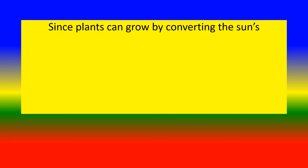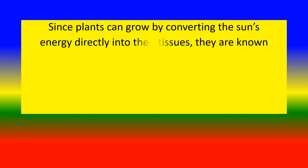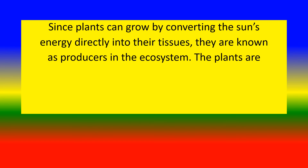Since plants can grow by converting the sun's energy directly into their tissues, they are known as producers in the ecosystem.